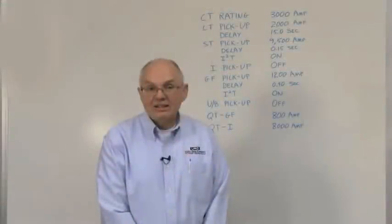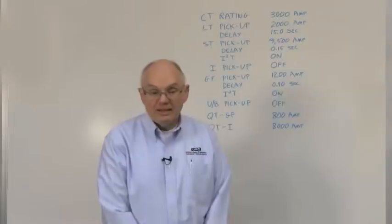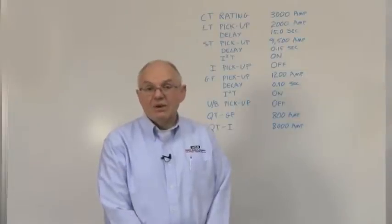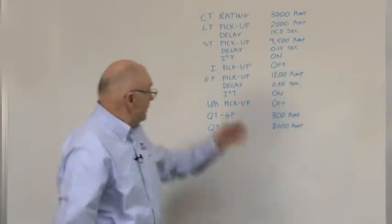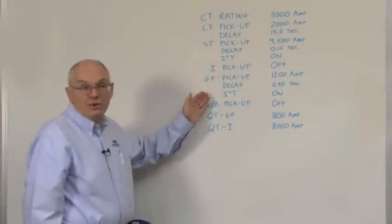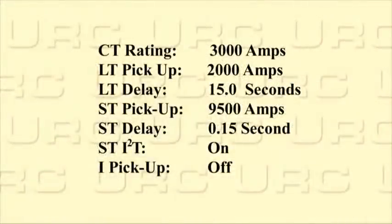If you must change the settings while the breaker is in service, please wear all the appropriate personal protective equipment. Before starting to program the ACPro trip unit, it's best to have all the settings available. These are the settings we're going to program into the trip unit: CT rating 3000 amp, long time pickup 2000 amp, long time delay 15.0 seconds.